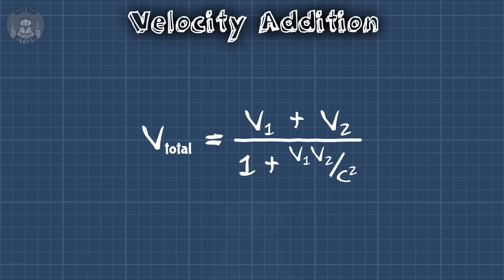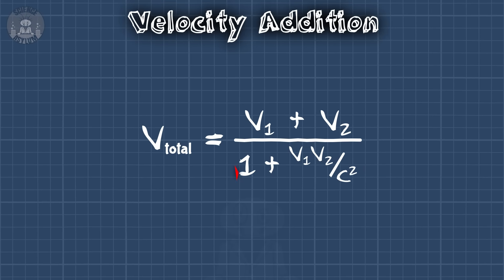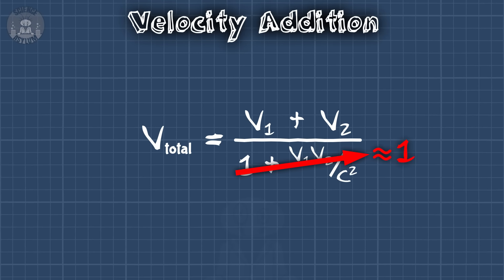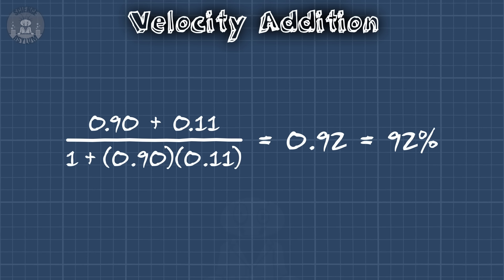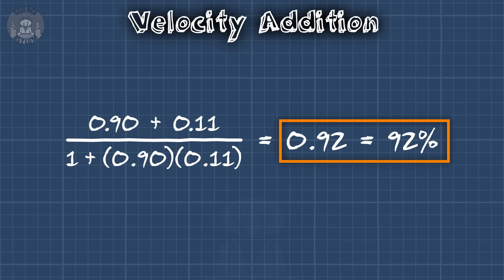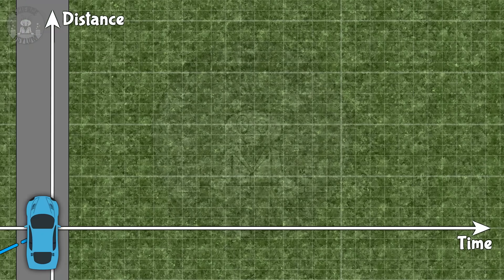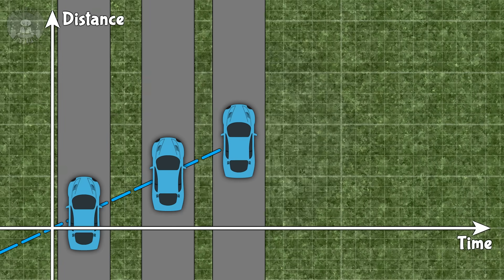Well, I mean, it works in this specific example, but in general it's wrong. The equation actually has a big denominator. It's just that for the normal human experience, that denominator is effectively 1. For the rocket example, it's larger, which lowers the result from 101% to 92%.